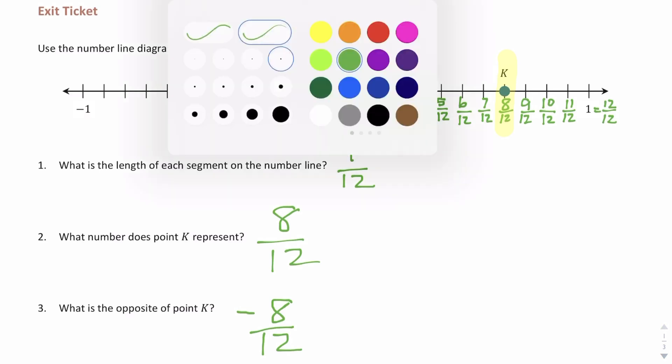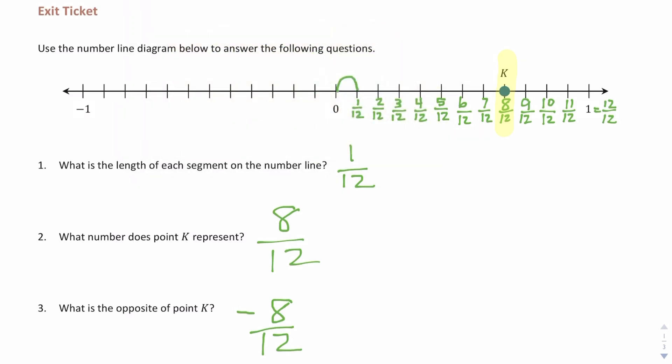The longer explanation is just to show that eight twelfths is eight spaces away from zero on this particular number line. So if I count eight spaces to the left: one, two, three, four, five, six, seven, eight, then I have the opposite of point K. The opposite of point K is negative eight twelfths.